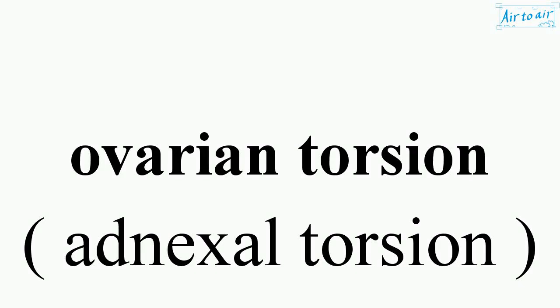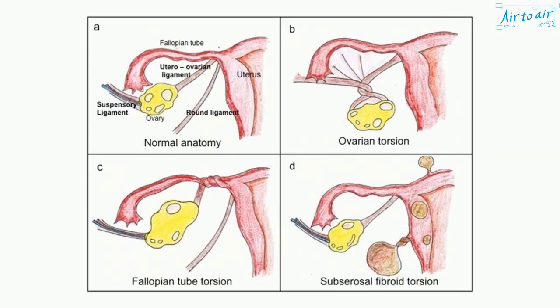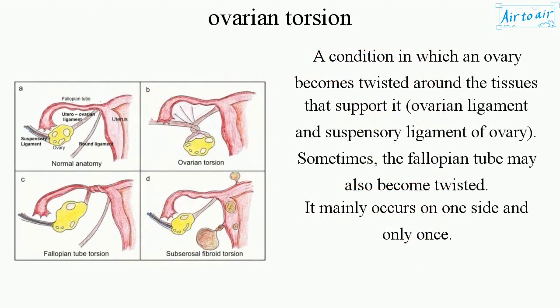Ovarian torsion: a condition in which an ovary becomes twisted around the tissues that support it, including the ovarian ligament and suspensory ligament of the ovary. Sometimes the fallopian tube may also become twisted.